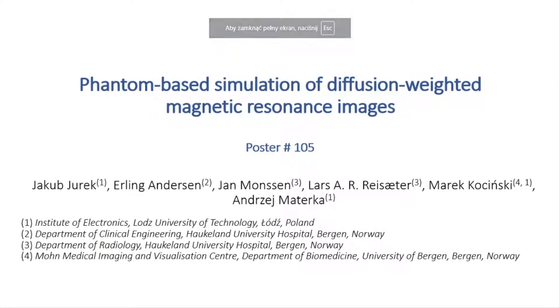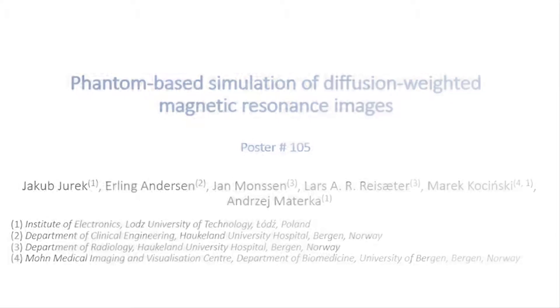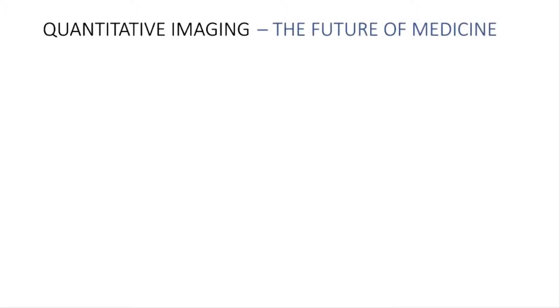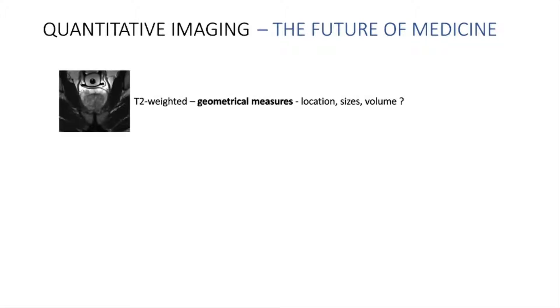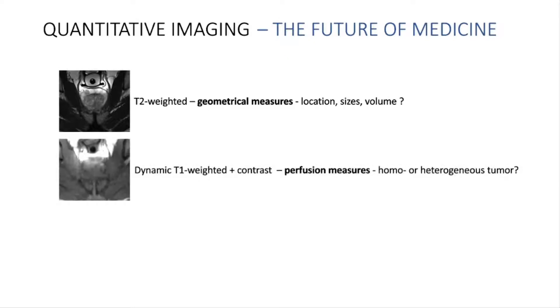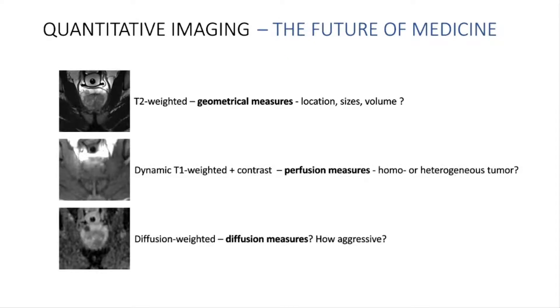Hello, my name is Jakub Jurek and I am happy to introduce our experiment. Quantitative imaging, allowing doctors to measure different properties of tissues, can be thought of as the future of medicine. To characterize a prostate tumor, for example, we would like to know its structural properties like shape or volume, and its physiological properties such as perfusion or diffusion measures.